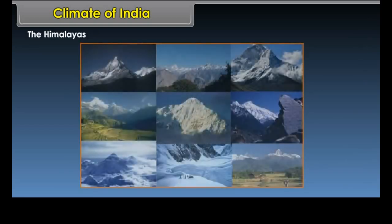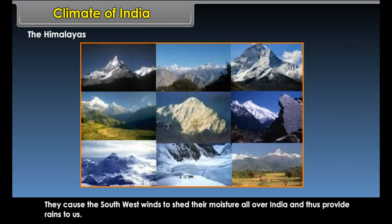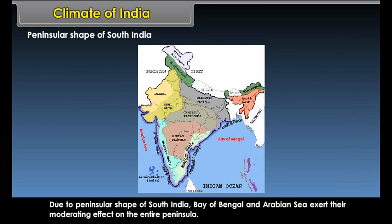The Himalayas protect India from the cold and chilly winds of central Asia in winter. They also cause the southwest winds to shed their moisture all over India, thus providing rains. Due to the peninsular shape of South India, the Bay of Bengal and Arabian Sea exert their moderating effect on the entire peninsula.